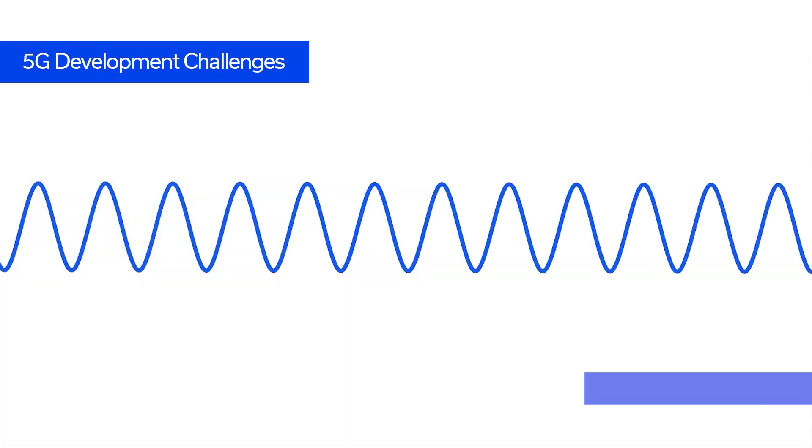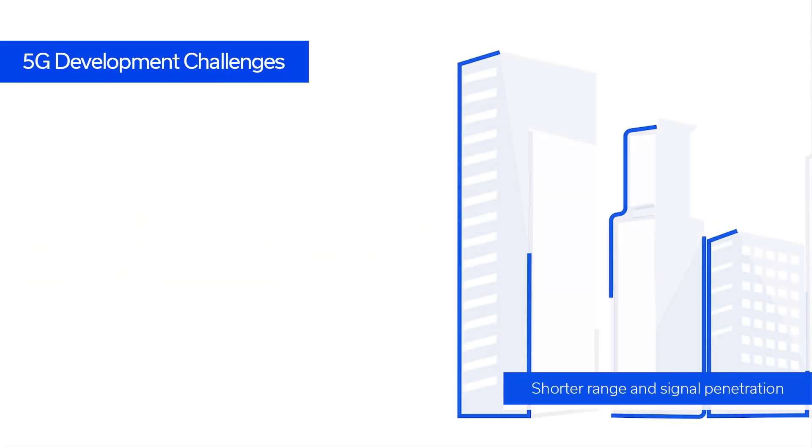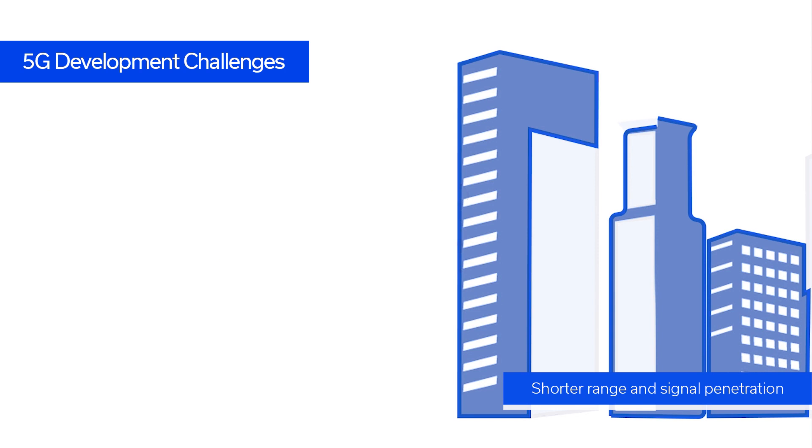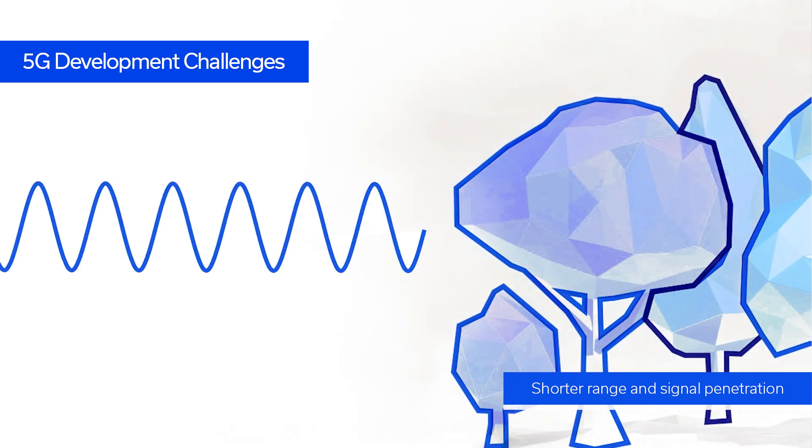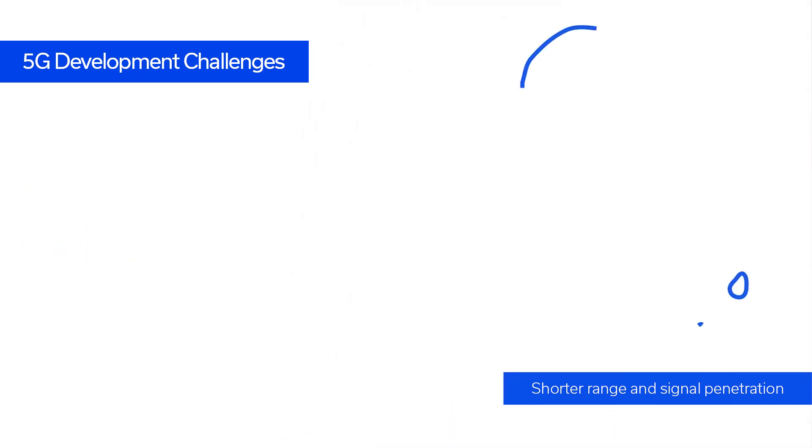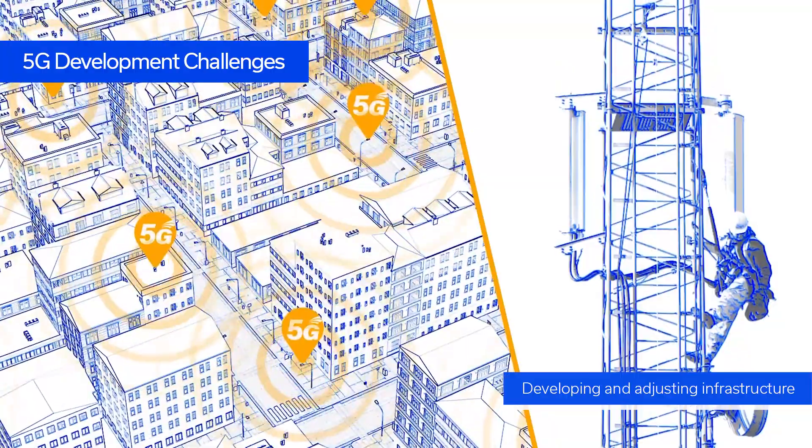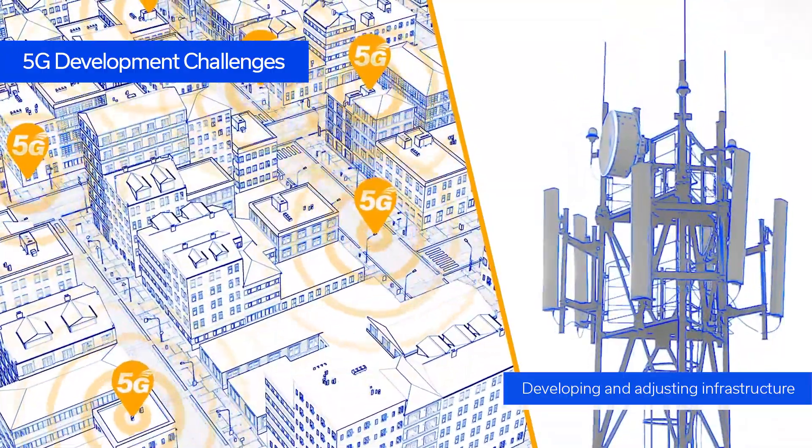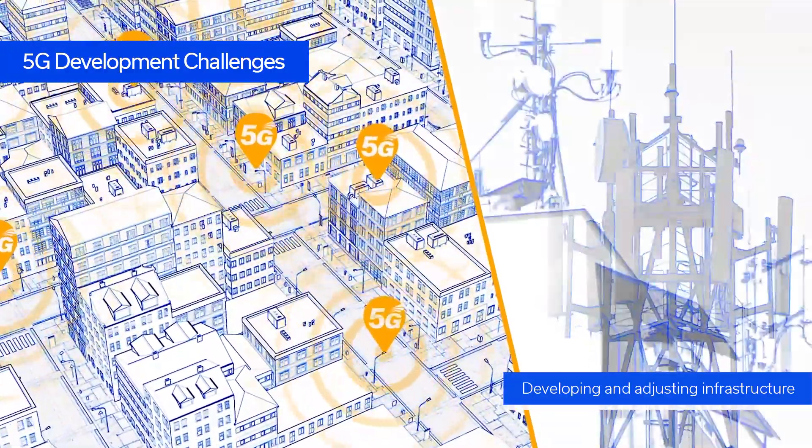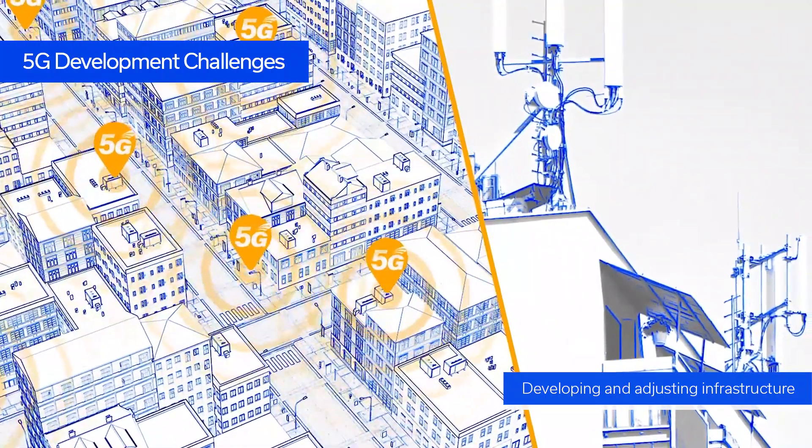For one thing, higher frequency signals have shorter range and poor penetration, which means that they can be very easily blocked by walls, trees, snow, and even rain. This means that we need a significantly denser infrastructure. In cities we will need access points at almost every corner to ensure seamless connectivity.